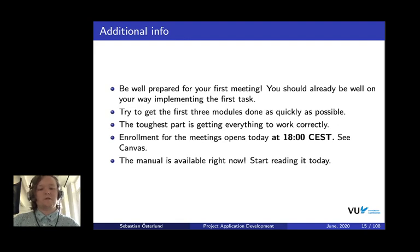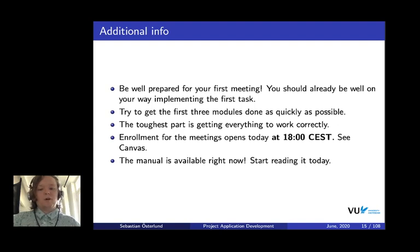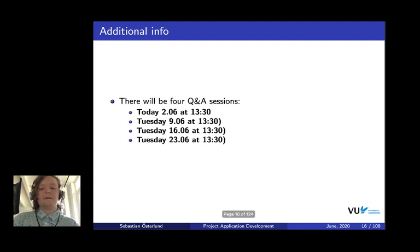One general hint: try to get the first three modules done as quickly as possible, since from our experience they're easier to implement than the rest. The toughest part is actually getting everything to work correctly in the end — you will have a bunch of bugs to debug. We'll open enrollment for TA meeting slots today at 6 PM; see Canvas for an announcement on how to enroll. The manual is available right now via the link on Canvas, so start reading it.